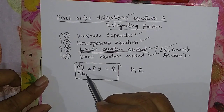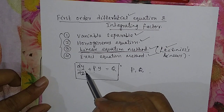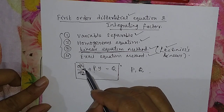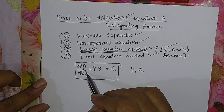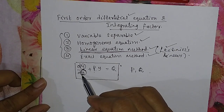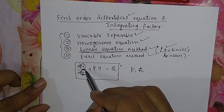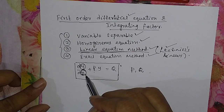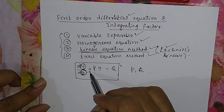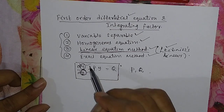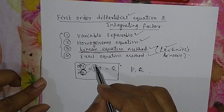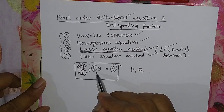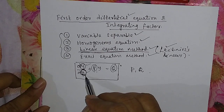As discussed in the previous video, x is your independent variable and y is your dependent variable. The value of y depends on x. P and Q are functions of x, the independent variable.